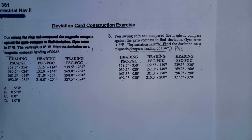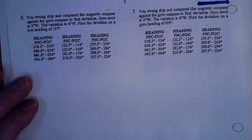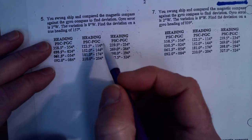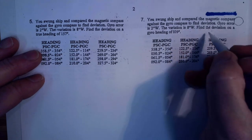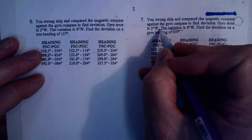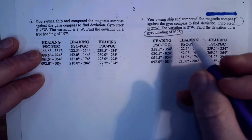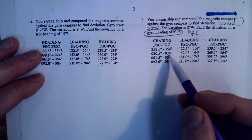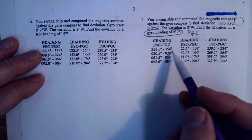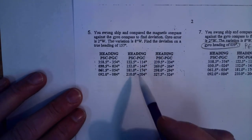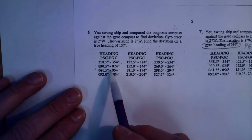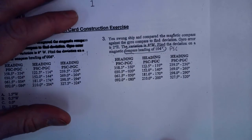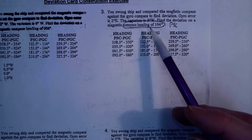I'm going to go through the PSC column. But note: if we flip to question seven, they want to find deviation on a gyro heading of 039 — that's PGC — so in that case we'd look in the PGC column and find the pair bracketing 039. There's also a third type where you're given a true heading, but we don't even have true here, so let's do this first problem.